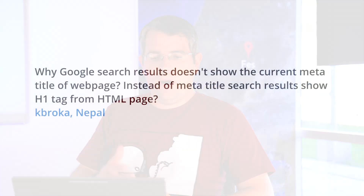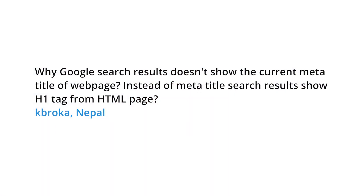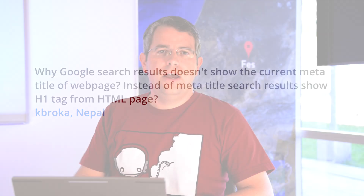We also got a question from Nepal that asked why Google search results doesn't show the current meta title of the web page, and they were saying that Google showed an H1 tag from the HTML page instead. So basically, whenever we try to choose or decide which title to show in a search result, we're looking for a concise description of the page that's also relevant to the query.